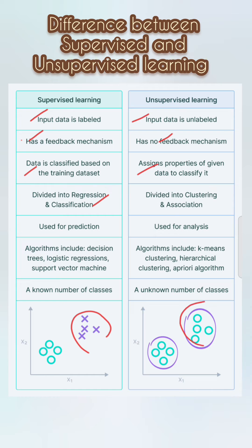Point five: supervised learning is used for prediction, whereas unsupervised learning is used for analysis. Point six: algorithms in supervised learning include decision trees, logistic regression, and support vector machines, whereas unsupervised learning algorithms include k-means clustering, hierarchical clustering, and the Apriori algorithm.